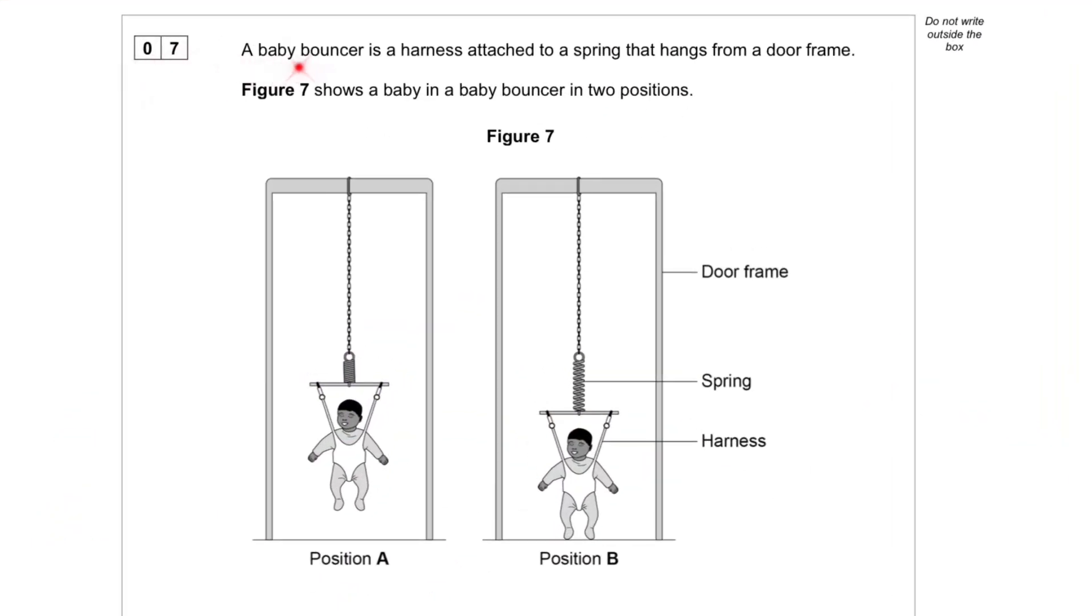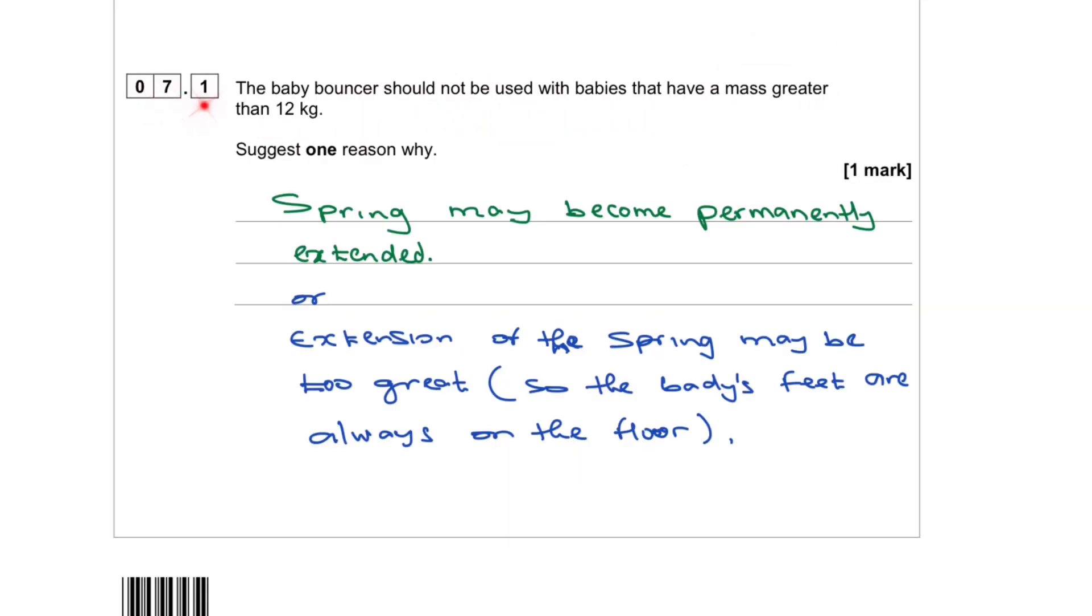Question 7: You've got a baby bouncer in a harness attached to a spring that hangs from a door frame, as shown in figure 7.1. The baby bouncer should not be used with babies that have a mass greater than 12 kilograms.